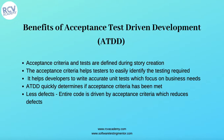The fourth benefit is that ATDD quickly determines whether acceptance criteria has been met or not. Once the developer uses test cases based on the acceptance criteria defined in user stories, they also look at the functional test cases defined by the tester and ensure the code being developed meets those test cases and acceptance criteria, making it easy to determine if criteria have been met.